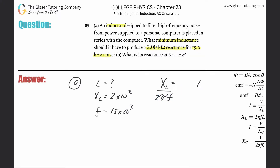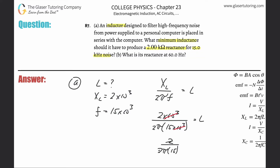Simply divide to solve for L. Plug it in: 2 times 10 to the third, all divided by 2 pi times 15 times 10 to the third, equals L. We can simplify — the 10 to the third units cancel, leaving 2 divided by 2 pi times 15. You can even cancel the 2 to keep reducing.